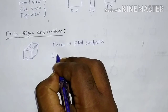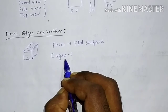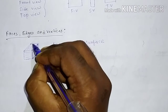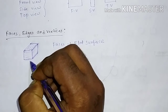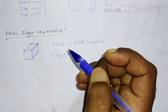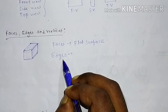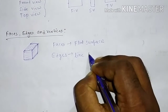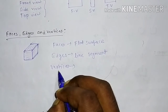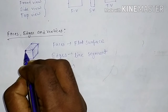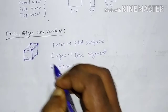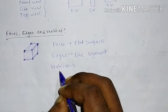Now, edges. Edges means line segments. How many line segments are there? Count: 1, 2, 3, 4, 5, 6, 7, 8, 9, and 3 are on the back side — so there are 12 edges in total. Vertices: what are vertices? Vertices means corner points — like this corner point: 1, 2, 3, 4, and 4 more are on the back side which are invisible — so 8 corner points, meaning 8 vertices.